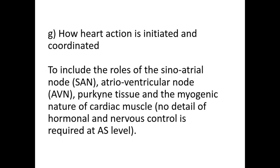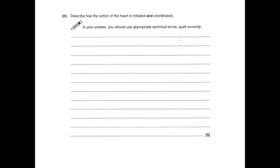Here is an exam question to demonstrate what might be asked. A very typical question would ask you to describe how the action of the heart is initiated and coordinated using the SAN and the AVN. The terms 'initiated and coordinated' are always the terminology given in the question when they want you to discuss the SAN and AVN. This is a five-mark question, so make sure you include five marking points. You could use bullet points or even draw a diagram to help. Just make sure you only use the space provided, as the examiner may not see anything written outside that space.